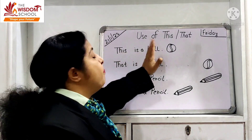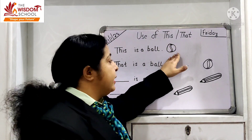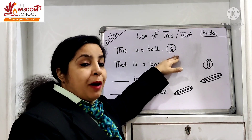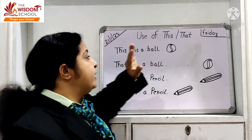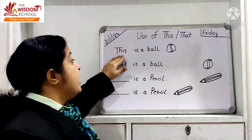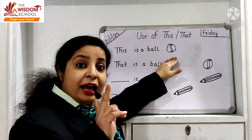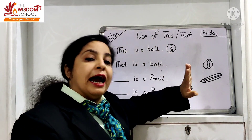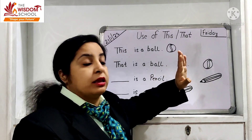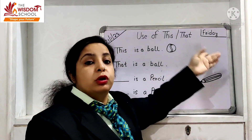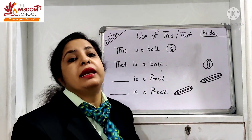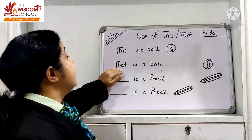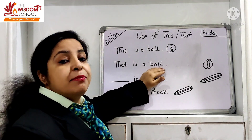Yahaan par hai: 'This is a ball.' Ab ye ball kya hai? Is sentence ke bilkul paas mein hai na? Jo cheez paas hoti hai, uske liye kya use karte hai? This. Lekin ball kitni hai? One hai. One ke liye hamesha this ya that — donou mein hi ek cheez ke liye use karte hai. Aur doosra: 'That is a ball.'